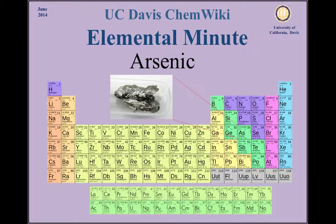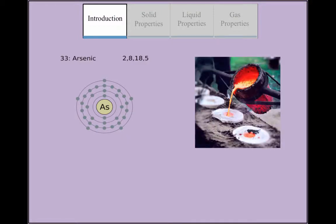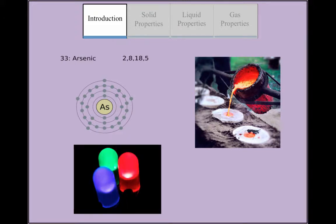Arsenic is element 33 and is almost always a solid. It is a metalloid with great usage of small amounts in alloys, giving a melted mixture of metals different properties. Since arsenic is a semi-metal, arsenic in the form of gallium arsenide is now used as a semiconductor for transistors and other electronic devices such as LEDs and lasers.